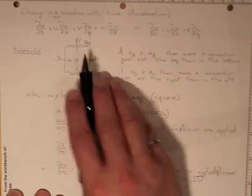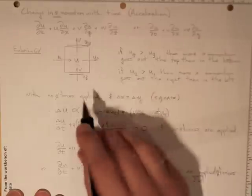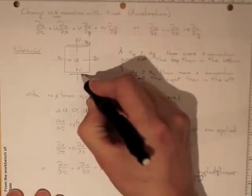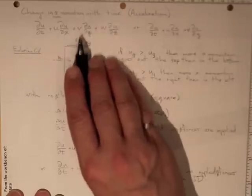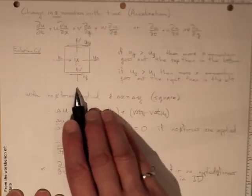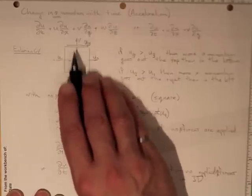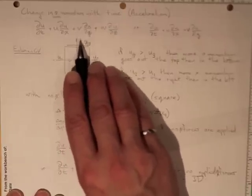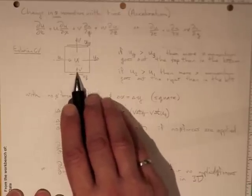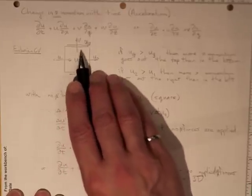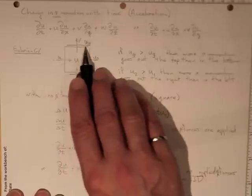So if u4 on the top here is greater than u3 on the bottom, then more x-momentum goes out the top than came in the bottom. And it was carried in through the bottom and out through the top by the y-component of velocity, even though it was x-momentum that we were talking about.